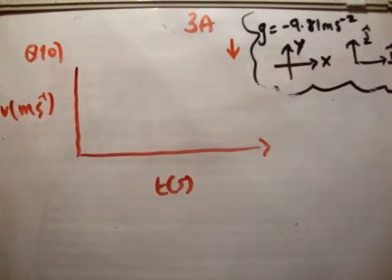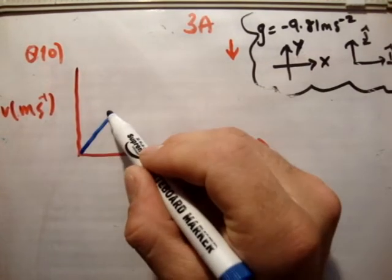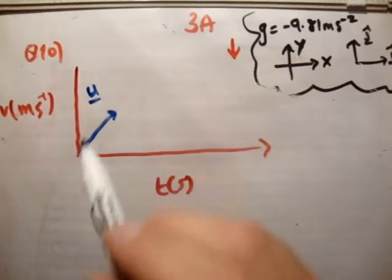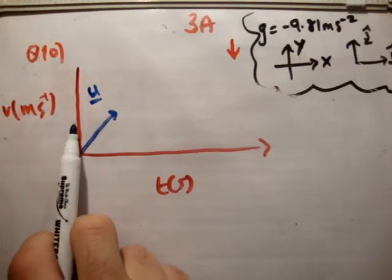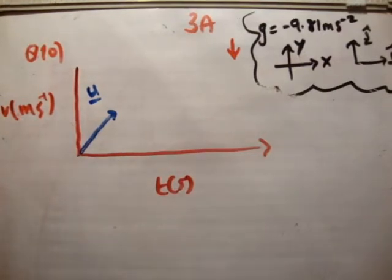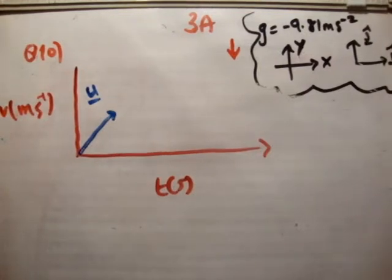We also know the projectile is projected, and I'm going to call that initial velocity u. Remember, u is a vector, therefore it's a resultant vector because it's not just vertical or horizontal. It takes up both x, y axis, or both, in both unit vector directions.